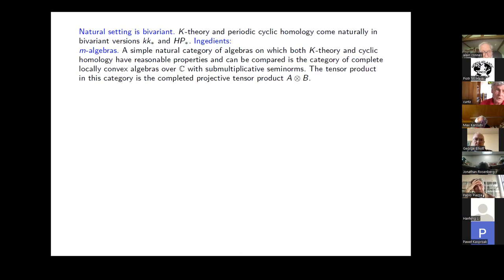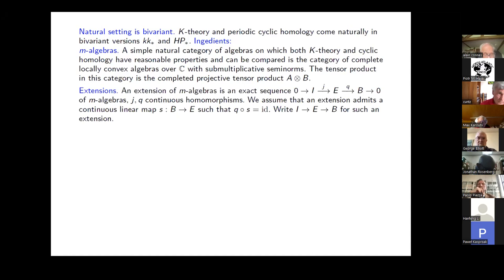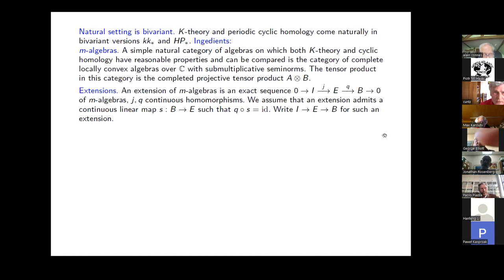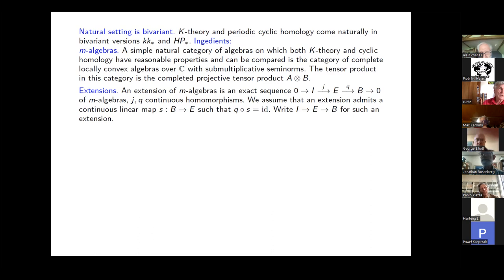The natural tensor product in this category is the projective tensor product of two algebras, completed. We also need extensions, because Bott periodicity is based on extensions and excision properties of K-theory. An extension in the category of m-algebras is an exact sequence of algebras where the maps are homomorphisms — a quotient map and an inclusion map. We always assume that our extensions admit continuous linear splitting: there is a map S from the quotient to the algebra in the middle so that Q∘S is the identity. We simply write I → E → V for such an extension.